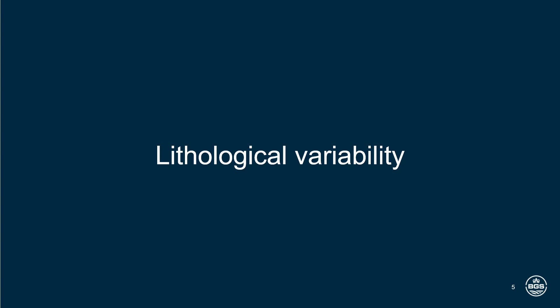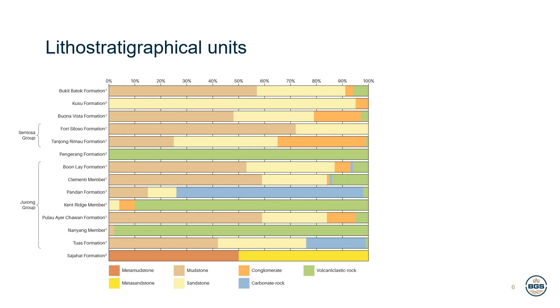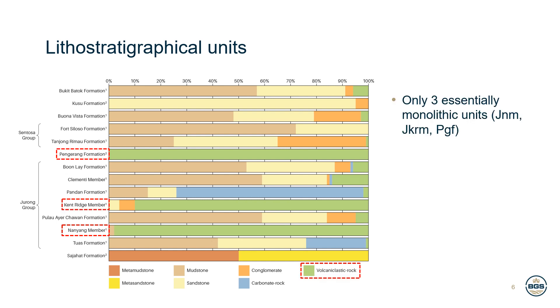Where data from units were not available, variability has been estimated from descriptions in the literature or at outcrop. The rock type terms used are broad to facilitate analysis. The lithostratigraphical units are, for the most part, highly heterolithic and frequently contain several rock types, including mudstone, sandstone, conglomerate, volcanoclastic rock, and carbonate rock. Only the Kent Ridge member, Nanyang member, and Pengrang formation are really dominated by a single lithology type — volcanoclastic rock.